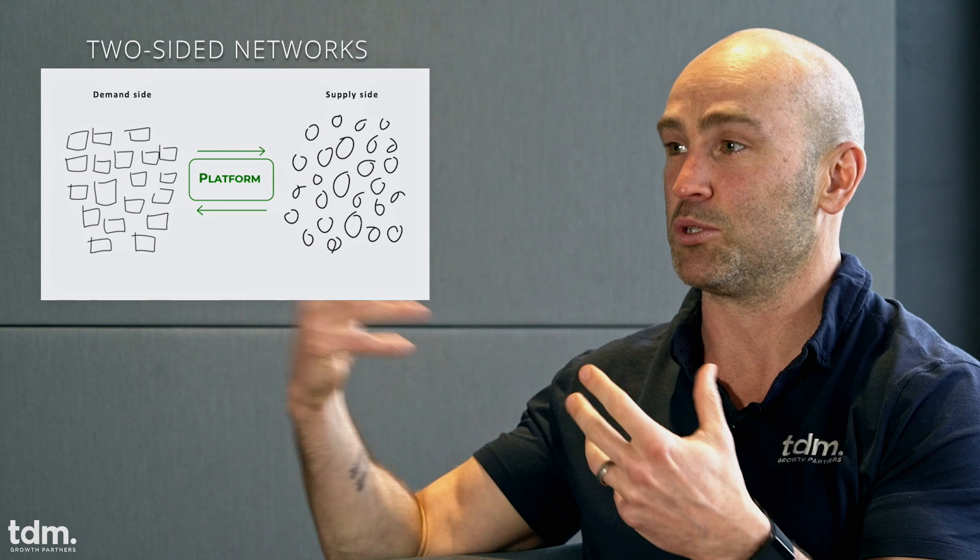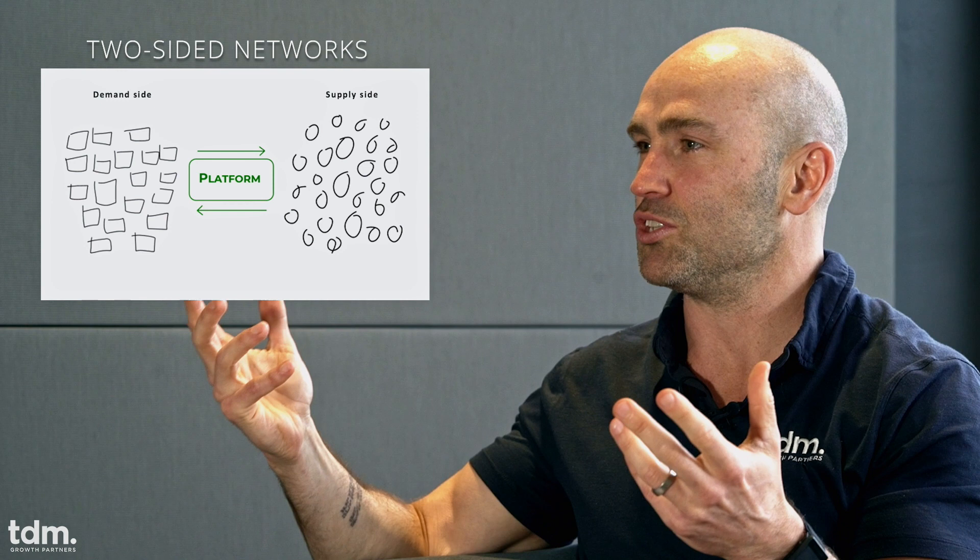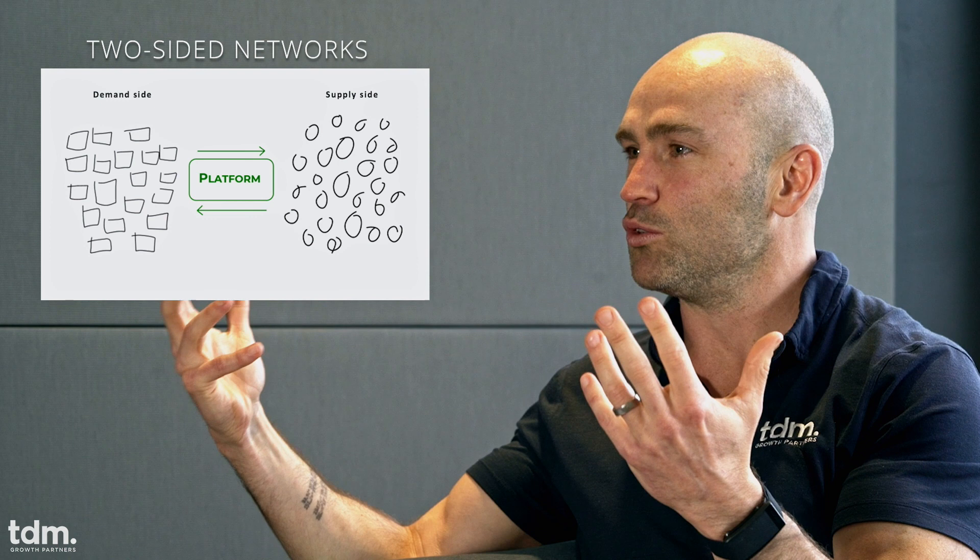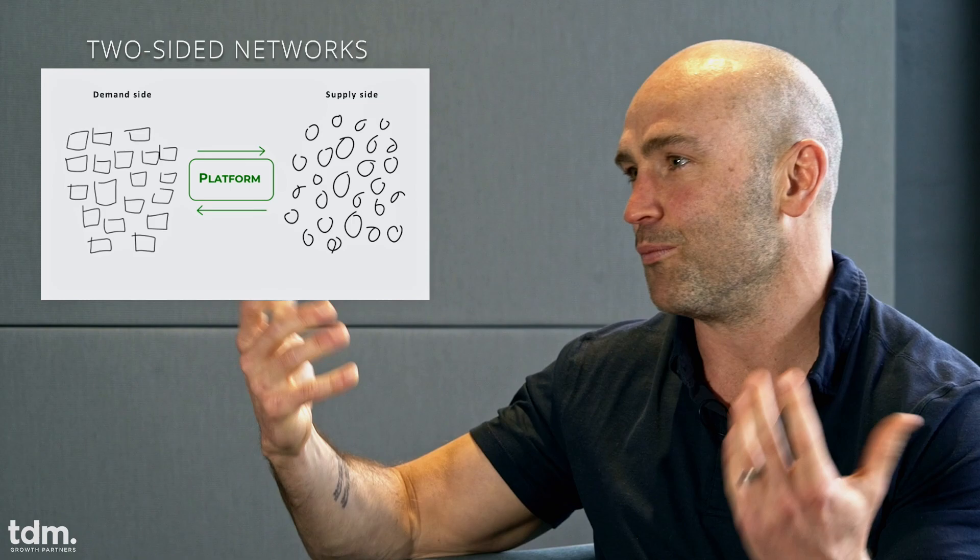Moving to two-sided networks: as the name suggests, there are two very distinct sides — the demand side and the supply side. How do we distinguish between them? It's really which way the money flows and which way goods and services flow. Money flows from the demand side to the supply side; goods and services flow from the supply side to the demand side. The network platform sits in the middle, reaping the benefit of the connectivity between the two.